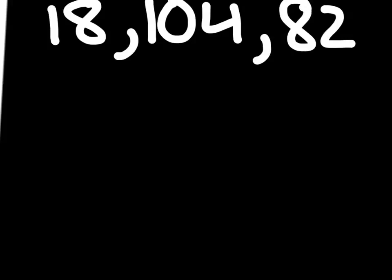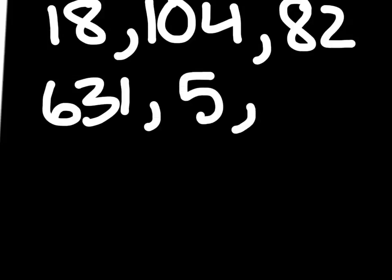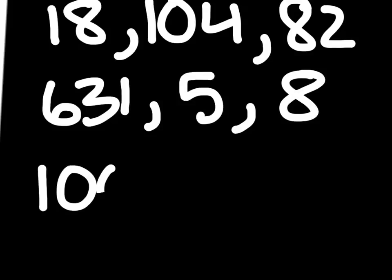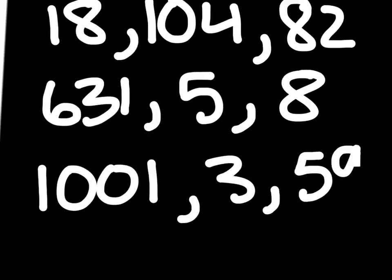Okay, so now I'm going to give you a few tougher orders, and I want you to order them from both least to greatest and from greatest to least. The first order is going to be 18, 104, and 82. The second order is going to be 631, 5, and 8. And the last order is going to be 1001, 3, and 59. You can pause the video to put these three orders in least to greatest and greatest to least.